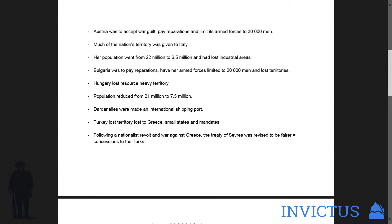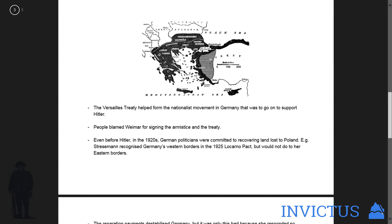The Dardanelles were made into international shipping ports — so no more Gallipoli invasions. Turkey lost territory to Greece, small states and mandates, so basically the Ottoman Empire was chopped up. And following a nationalist revolt and a war against Greece, the Treaty of Sèvres was revised to be fairer against the Turks, given that they had a revolt and things were not going well in Turkey.